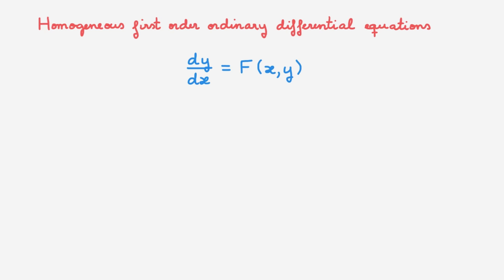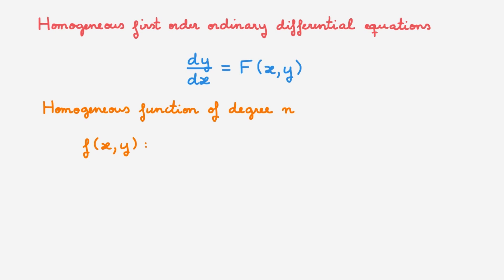Homogeneous functions are a topic in themselves, but for the purposes of this video all we need to know is the definition of a homogeneous function of degree n. We say that a function of two variables f(x,y) is homogeneous of degree n if when we multiply every argument of the function by any scalar lambda, the result is equal to lambda to the power n multiplying the original function. Going back to our differential equation, we say it is homogeneous if the function f is a homogeneous function of degree 0.